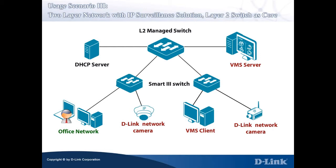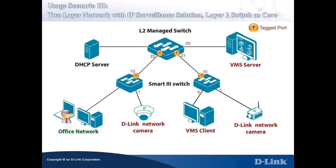This slide shows the connection ports among the L2 Managed Switch, Smart 3 Switch, and all of the components. The links between the Layer 2 Managed Switch and the Smart 3 Switches are trunk lines with tagged ports because they have to carry multiple VLANs. For this scenario to work properly, you need to have DHCP service for both the Office and Surveillance Network — either two DHCP servers or one DHCP server that can provide DHCP service for both Office users and surveillance devices.